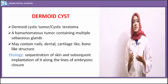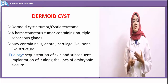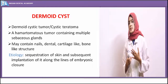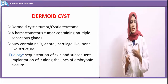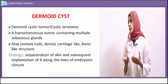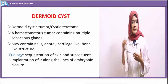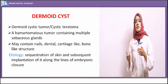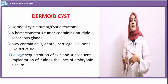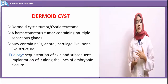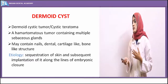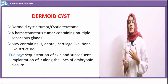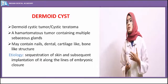It affects ectodermal-derived structures like the nails, dental tissues, cartilage, bone, etc. The etiology of cyst formation is the sequestration of the epithelial lining — that is the skin, epidermis or dermis. This epidermis is implanted into the underlying tissue. Implantation along the lines of embryonic closure leads to formation of a cyst — the dermoid cyst.